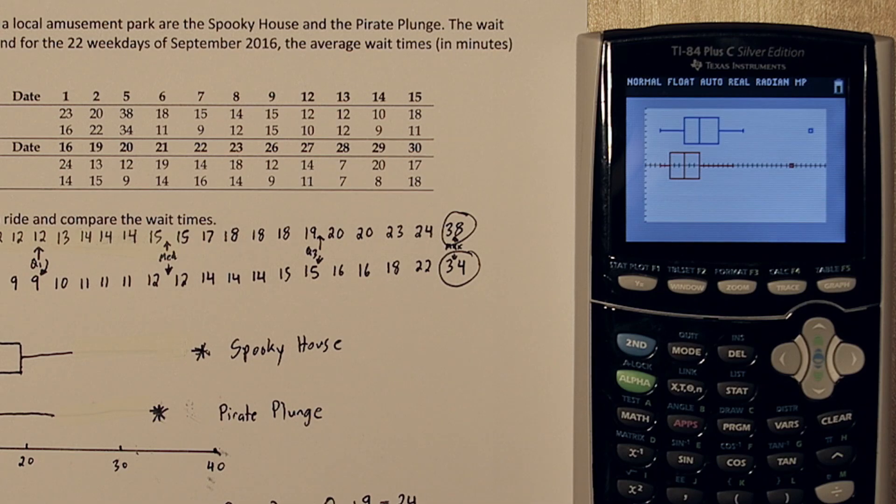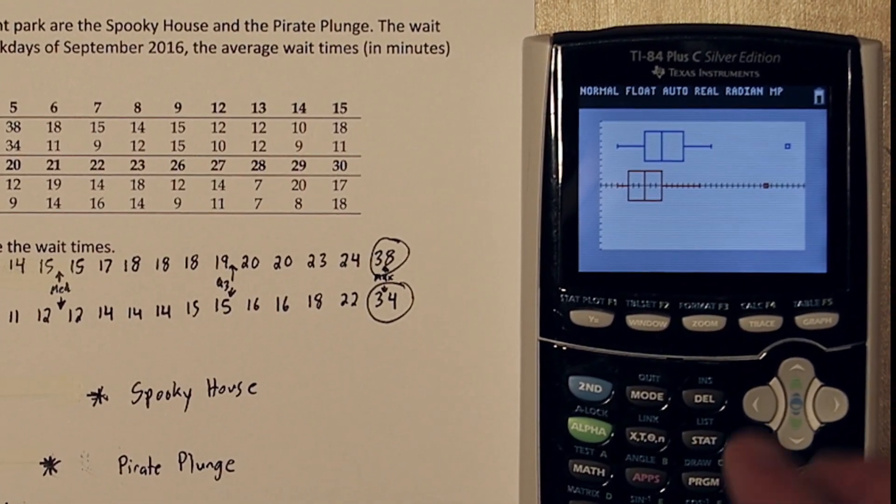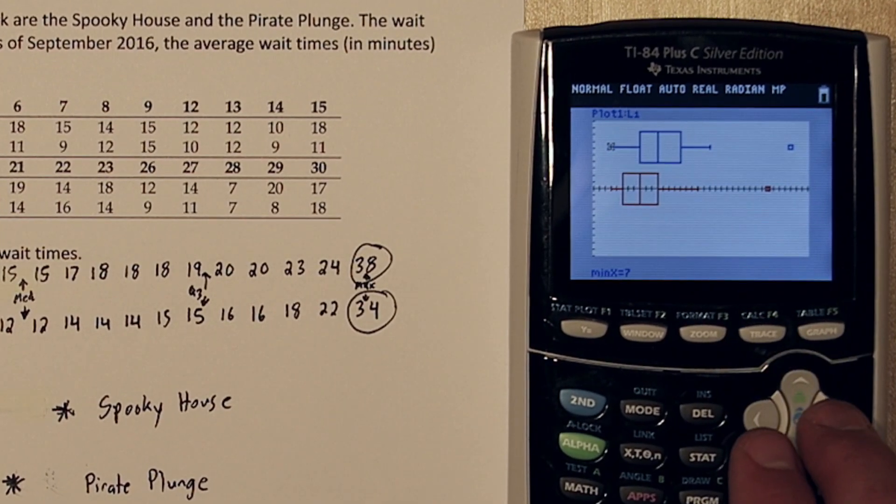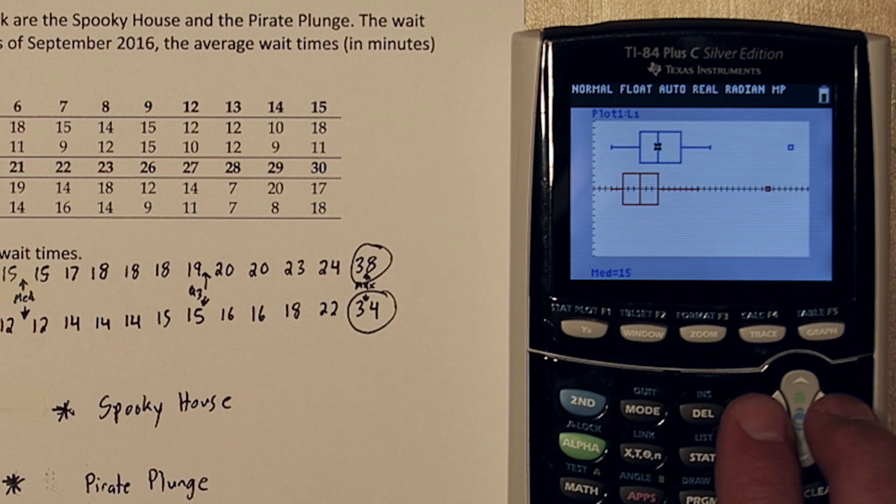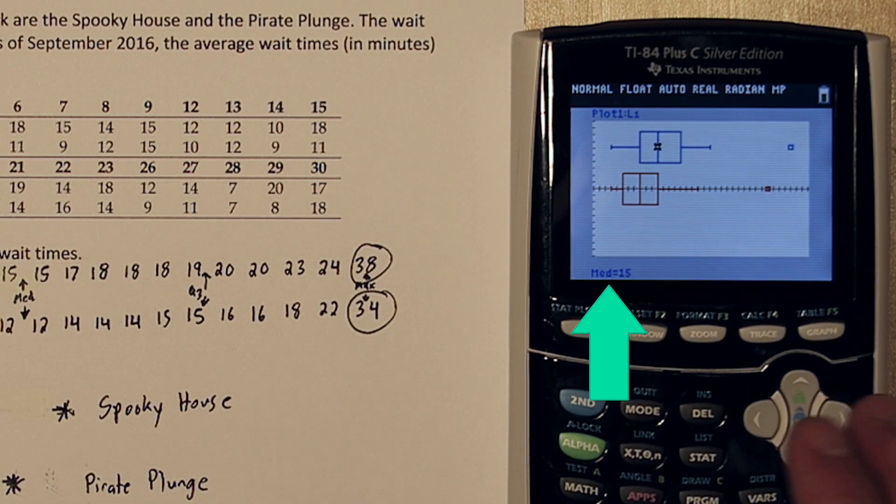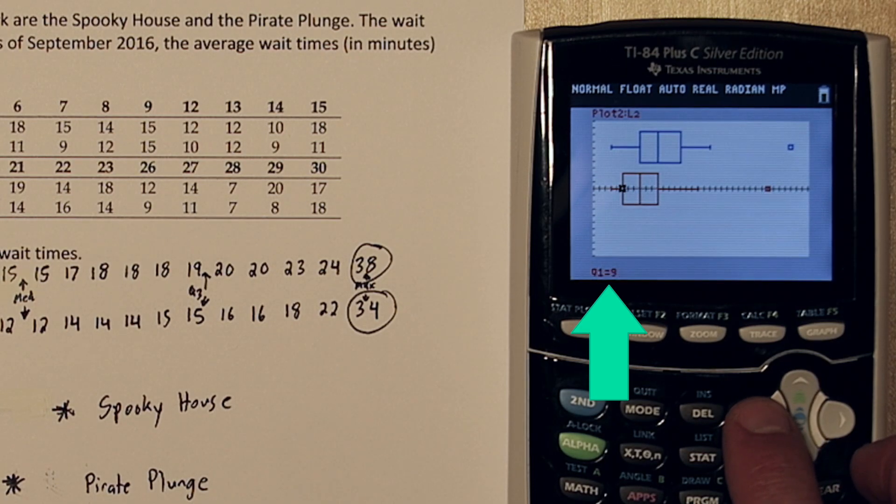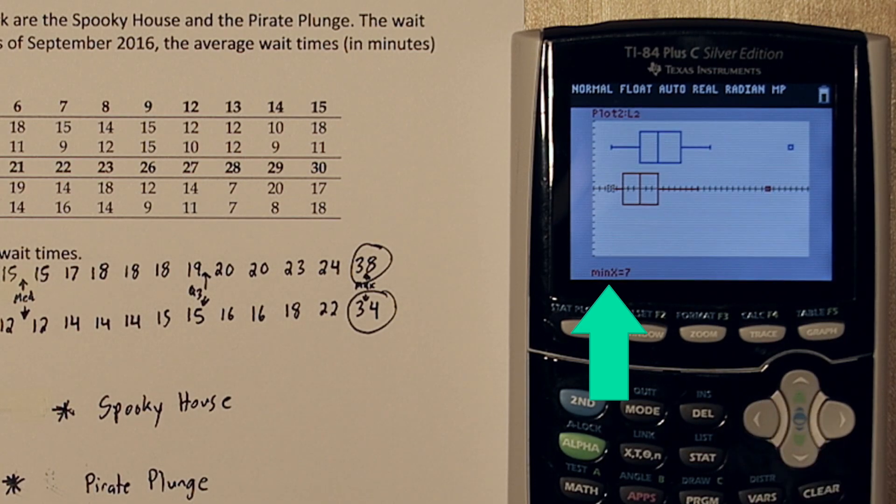Now suppose you used your calculator to graph these, and now you want to transfer it to the paper. Here's a useful function. If you press Trace, you can use the arrows to scroll around and jump from each of the values. So here's the minimum of Spooky House, quartile 1, median, quartile 3, maximum that's not an outlier, and then there's the true maximum. And then you can go down and check all the data for Pirate Plunge as well.